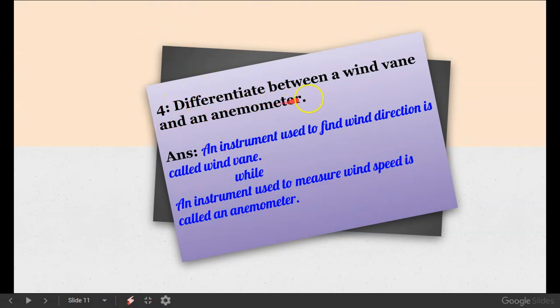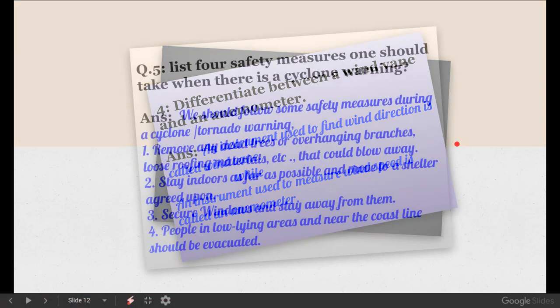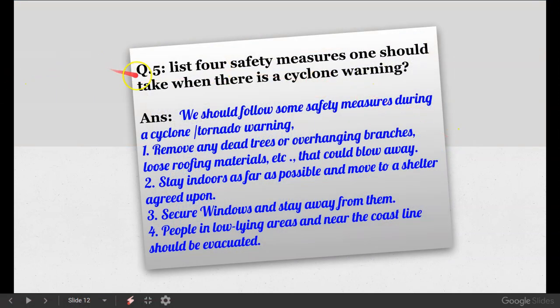Question number 4. Differentiate between a wind vane and an anemometer. We are going to complete this video after one question. That's it. An instrument used to find wind direction is called wind vane, while an instrument used to measure wind speed is called anemometer. That's it. You have read all the pictures. So let's move on.